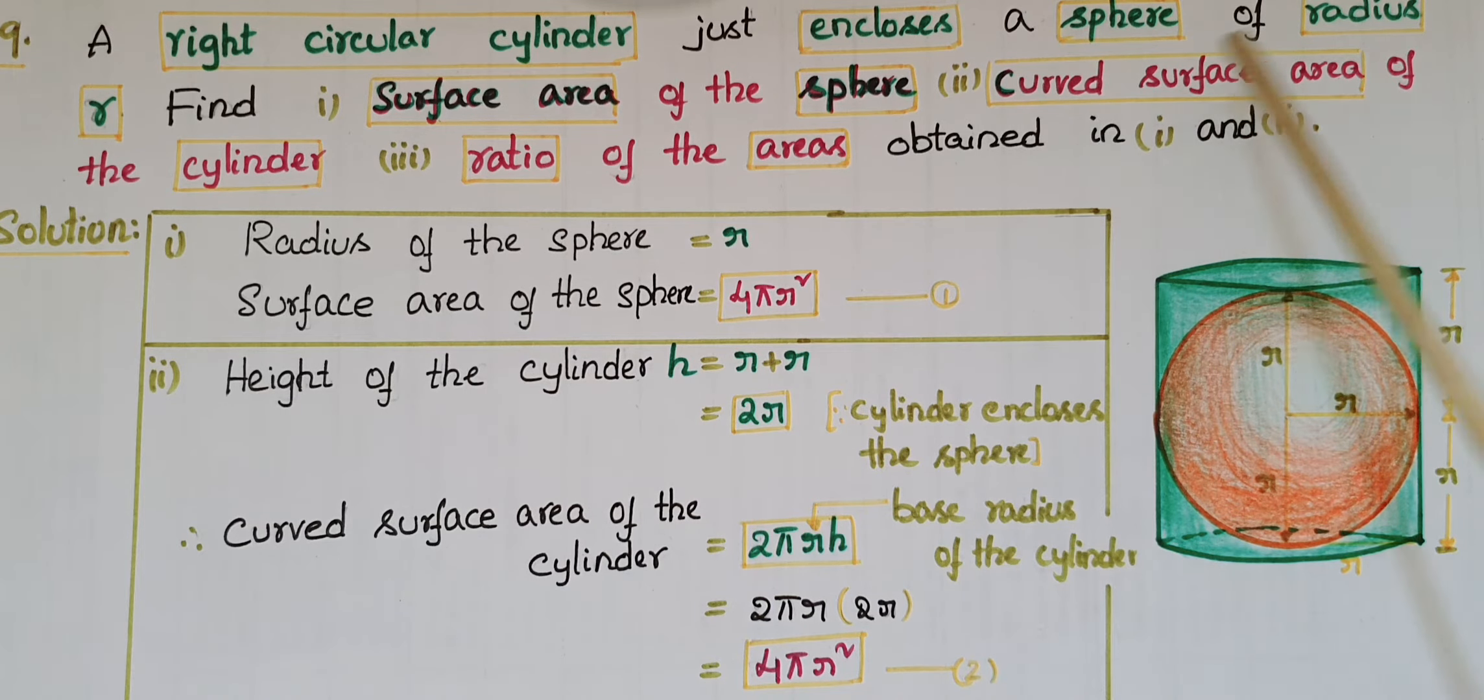Second one, we have to find curved surface area of the cylinder. So here the right circular cylinder encloses the sphere of radius r. So here this is r and this is also r. So height of the cylinder is r plus r, that is equal to 2r.